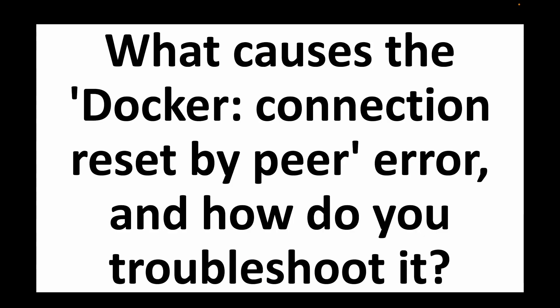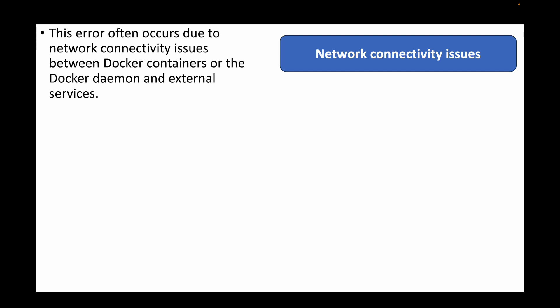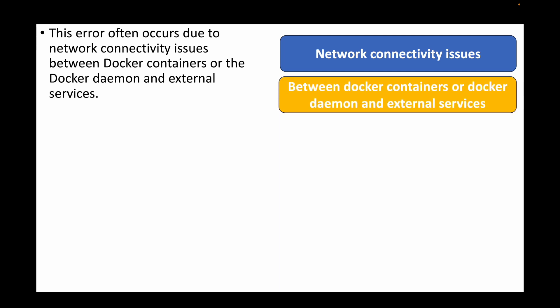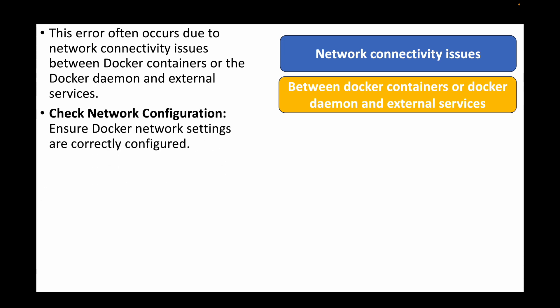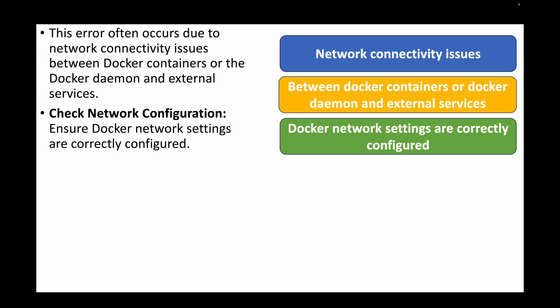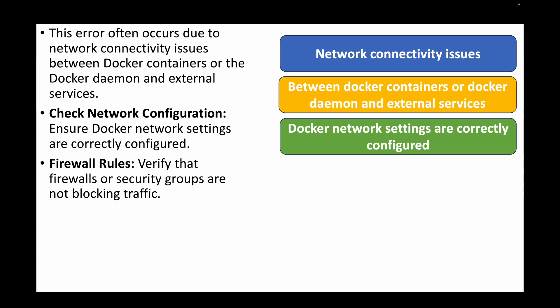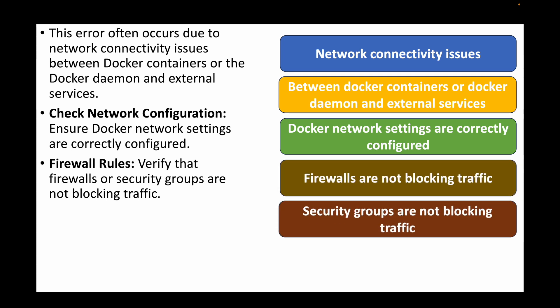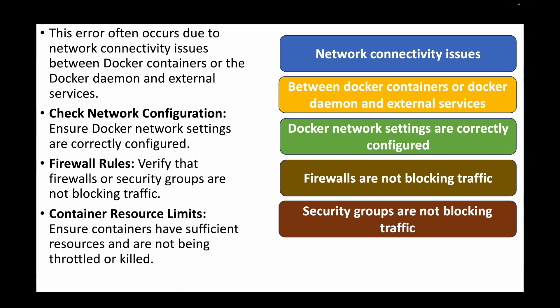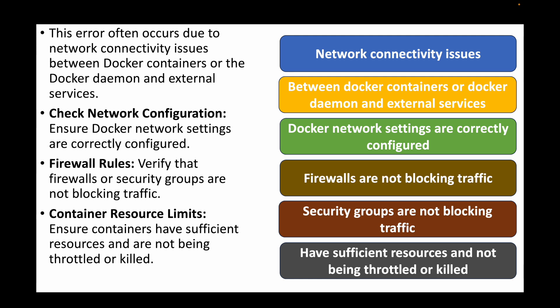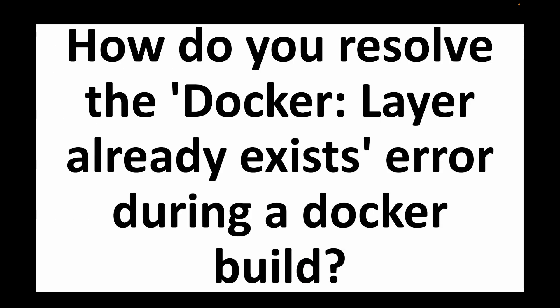The next question is: what causes the 'Docker connection reset by peer' error and how do you resolve it? This error generally indicates network connectivity issues between Docker containers, the Docker daemon, and external services. Check the Docker network settings to ensure they are correctly configured, verify that no firewalls or security groups are blocking traffic, and check container resource limits to ensure containers have sufficient resources and are not being throttled or killed.